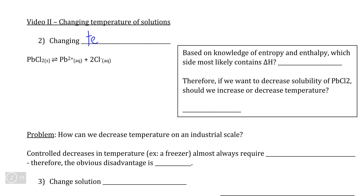In this video, we're going to consider the effects of temperature on solubility equilibrium systems and look at how we can use temperature in order to decrease the amount of toxic heavy metal ions that end up in water supplies.